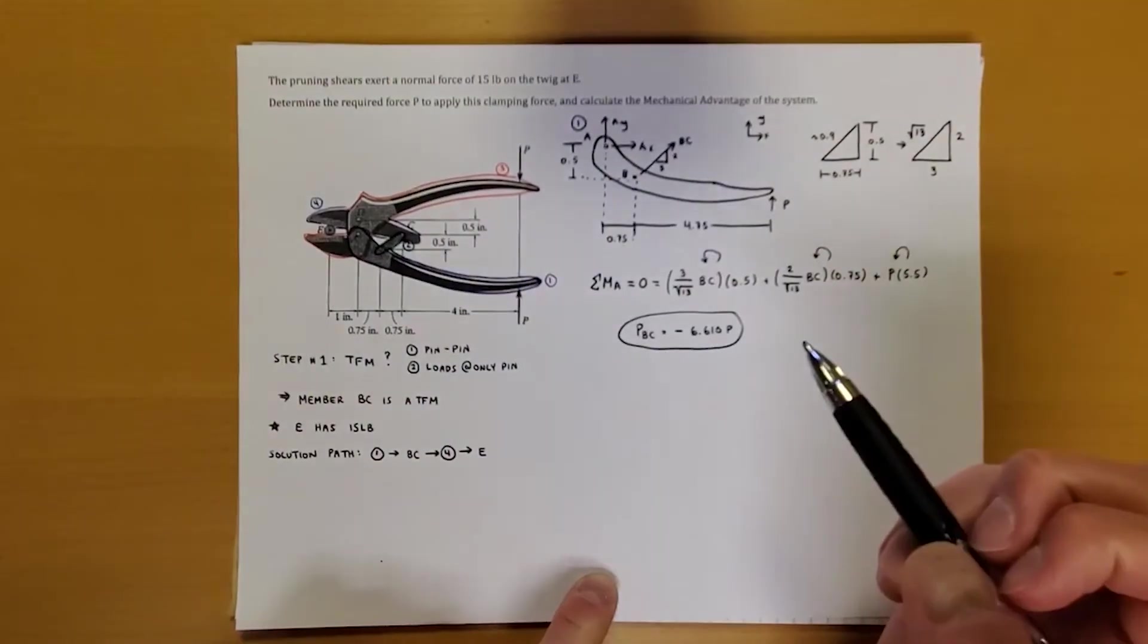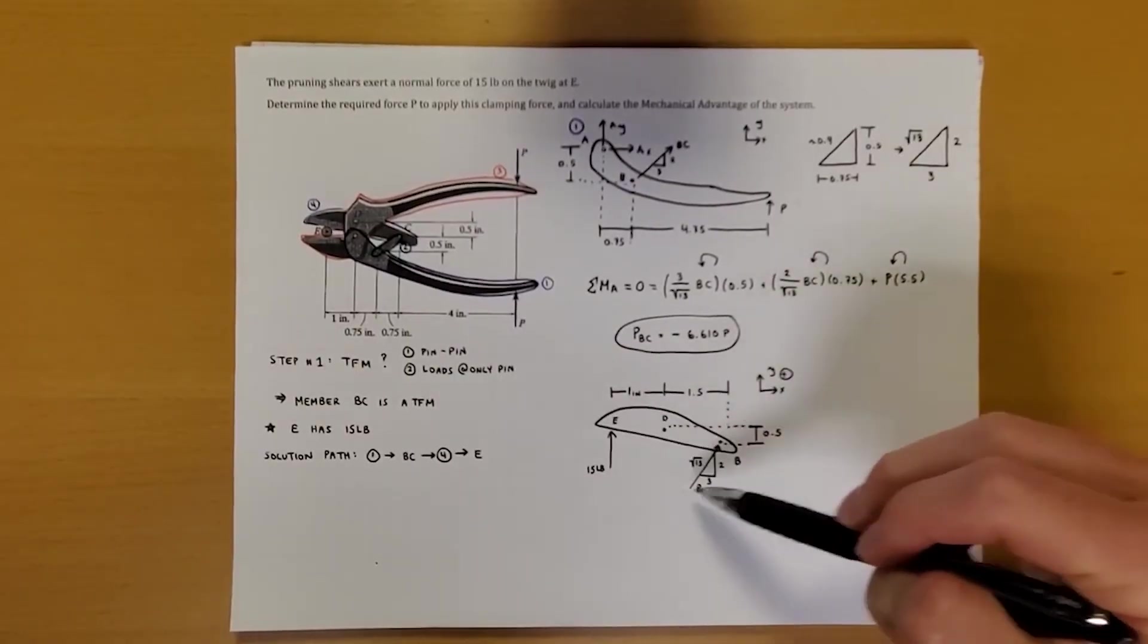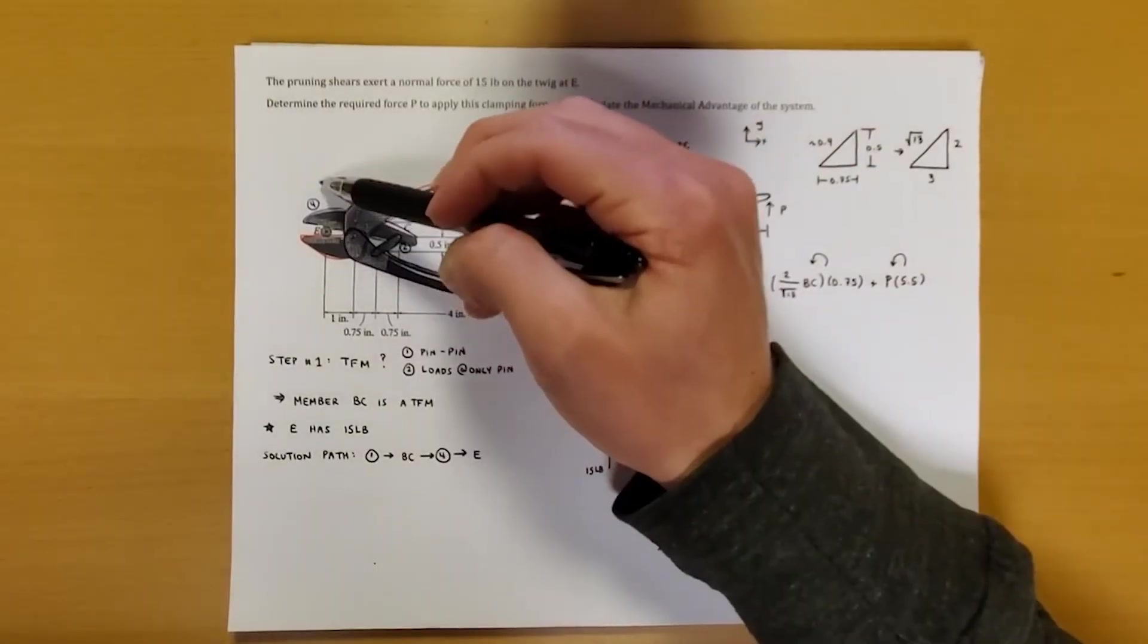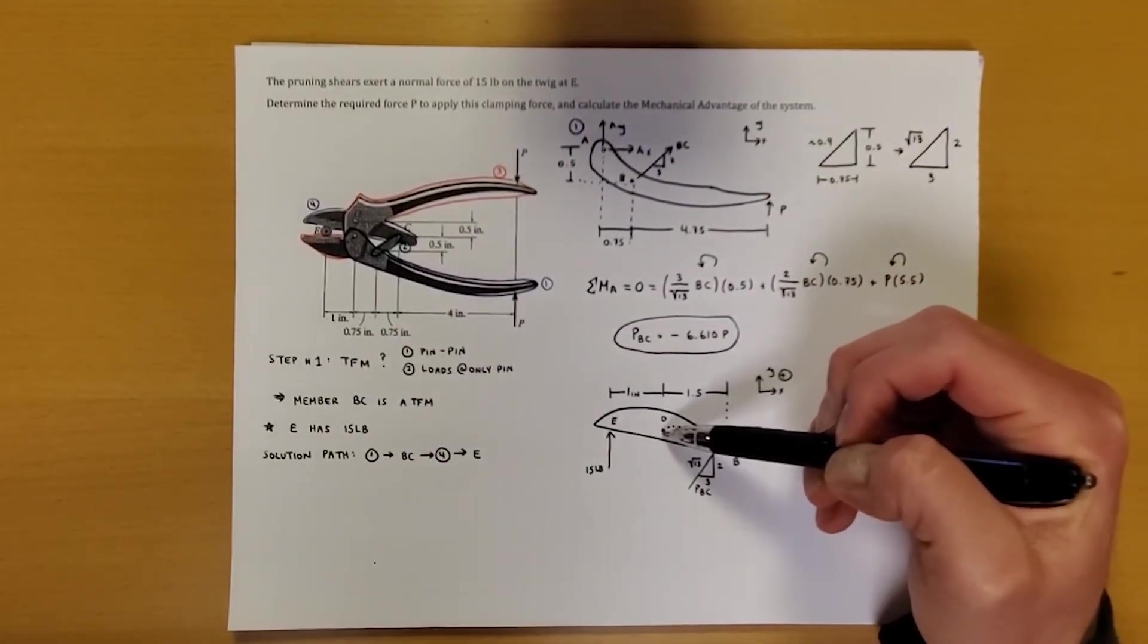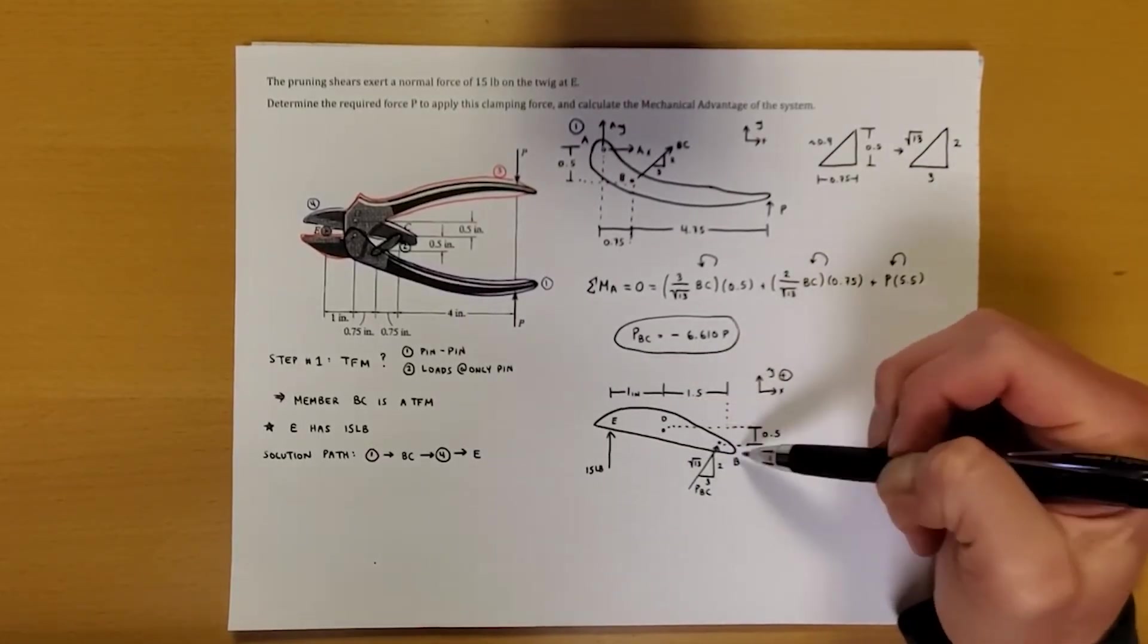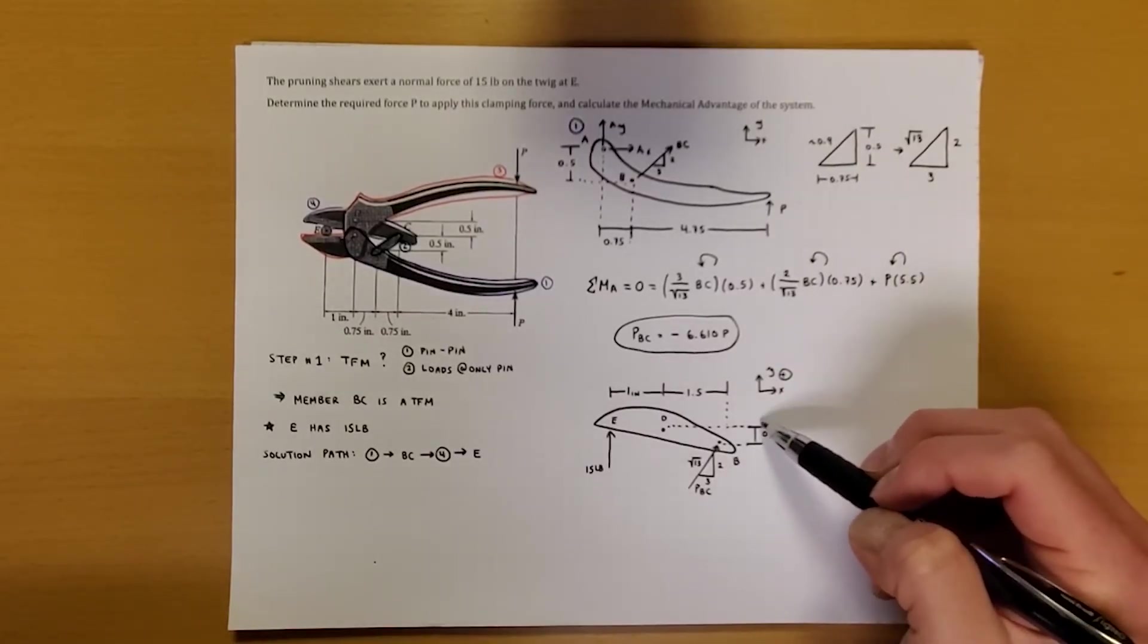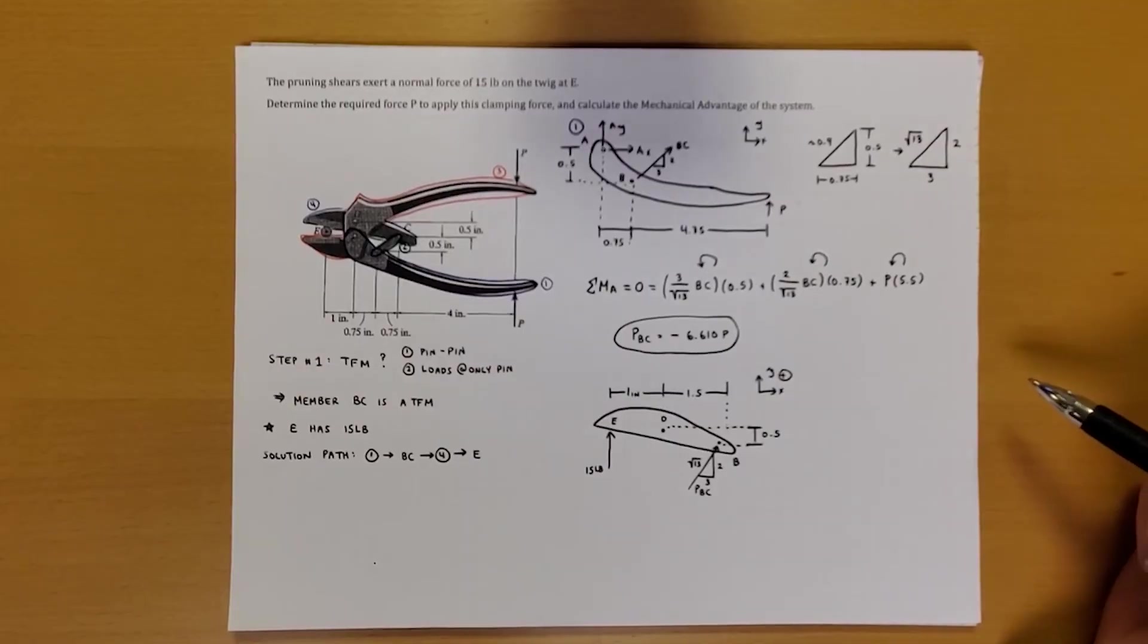So now what I've gone ahead and done is I've drawn a free body diagram of the top cutting shear. And we can see the following things. We've got 15 pounds coming up, which is the twig's normal force that we're applying. We're cutting. Now we're applying 15 pounds down on the twig, but the twig is pushing up onto the shears with 15 pounds. And that's why we have this here. We've got point D, which is holding everything together. It's one inch between point E and point D. And it's 1.5 inches between D and point B over here. This is where we have PBC applied at our 2, 3, root 13 triangle. And we've got 0.5 inches from B to D vertically and 1.5 inches horizontally. We've also drawn our little x, y axes.